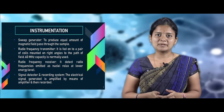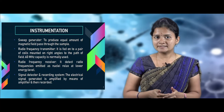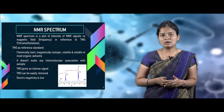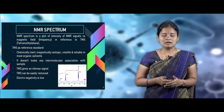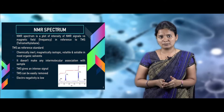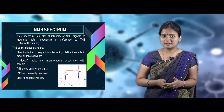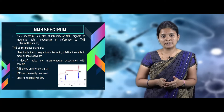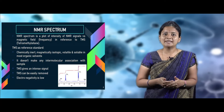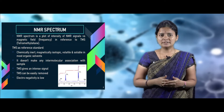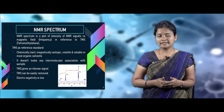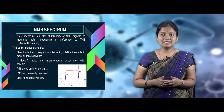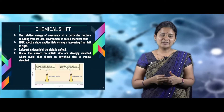The NMR spectrum is plotted as intensity of NMR peaks against frequency, relative to a standard called TMS. The full form of TMS is tetramethylsilane, and it is mostly used as a reference standard in NMR spectroscopy. TMS is chemically inert, volatile, durable, soluble in most organic solvents, does not interact with sample molecules, gives a strong and intense peak, can be removed from the sample solution easily, and has low electronegativity compared to other standards.